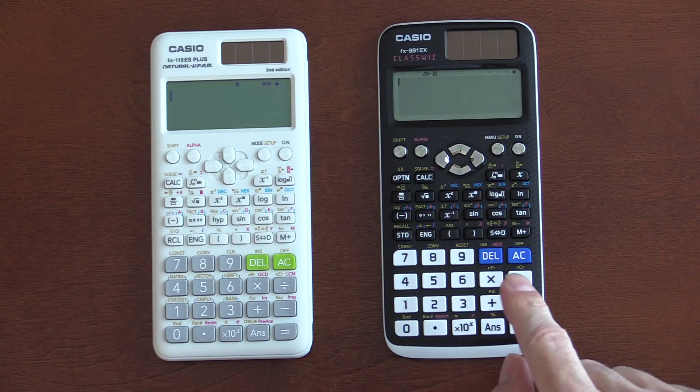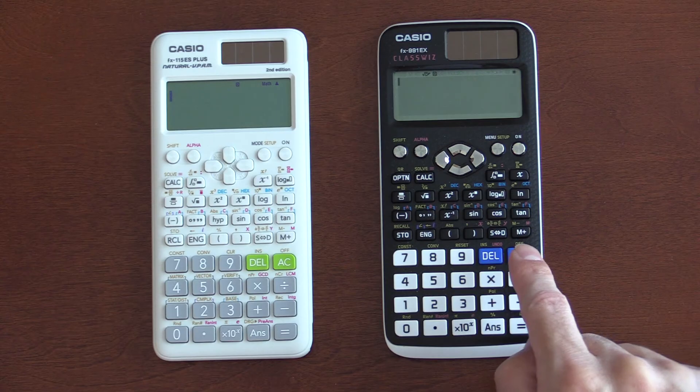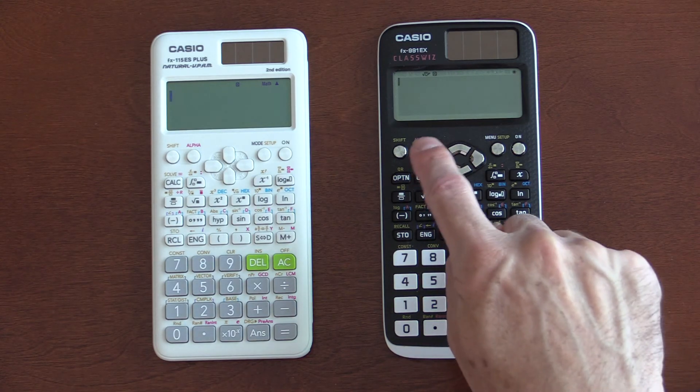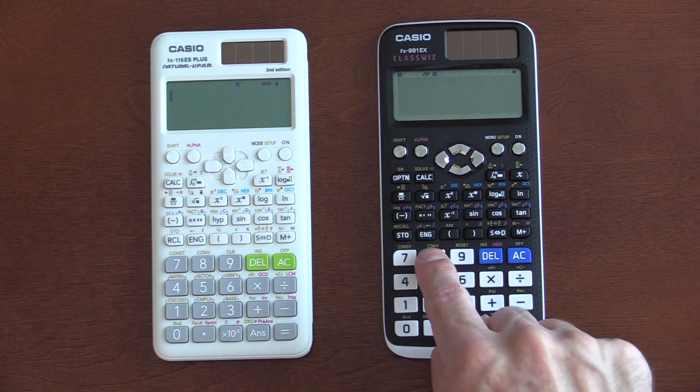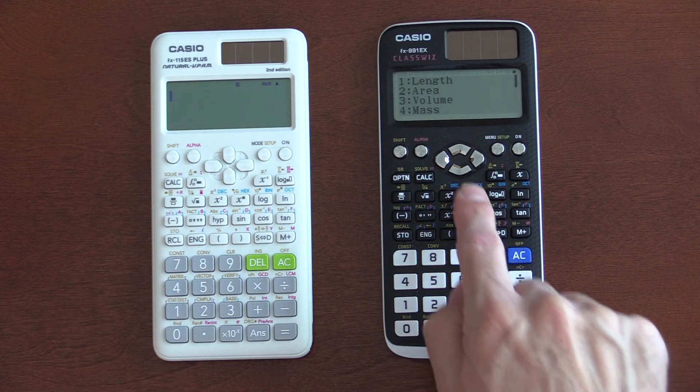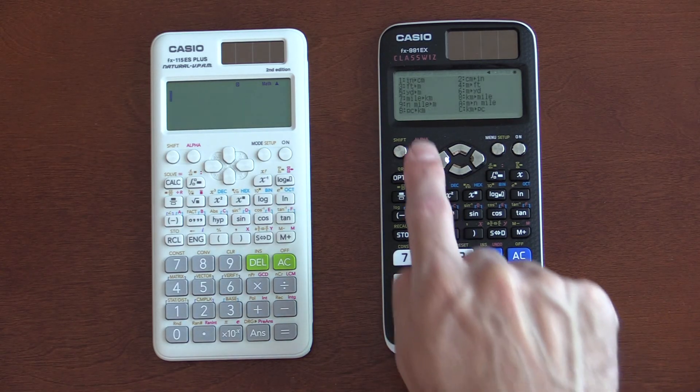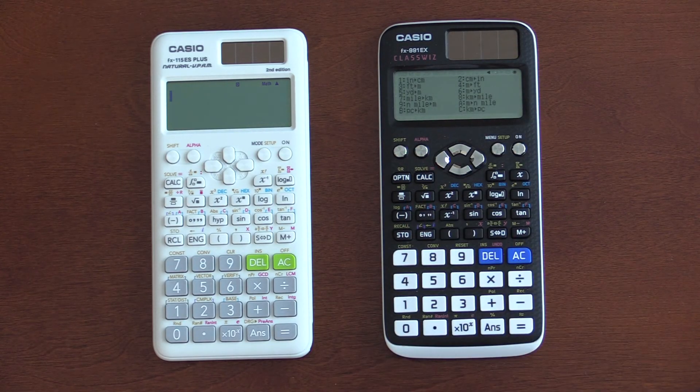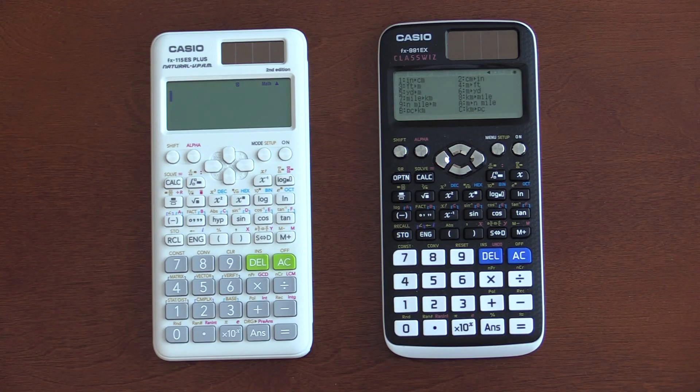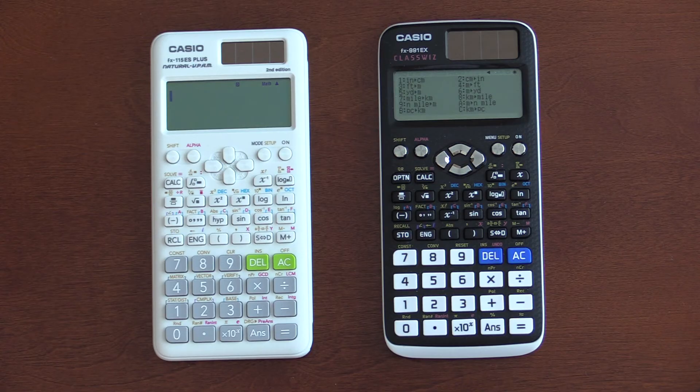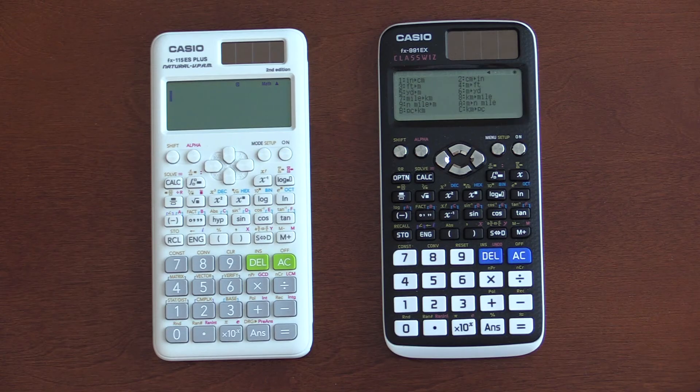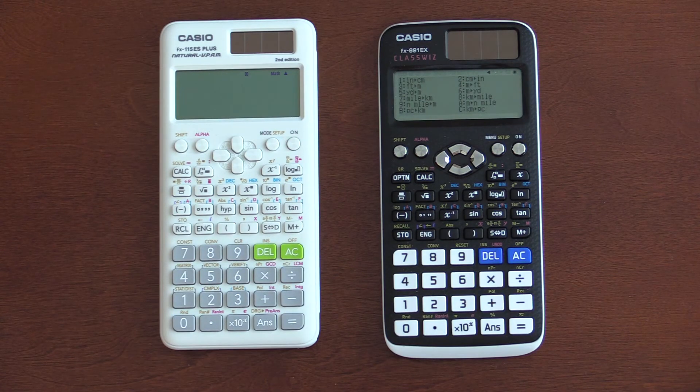Next, I want to show if you're doing conversions on these calculators. The EX is nice because when you go into the conversions menu, they're listed topically. So, let's say we're doing length, we're just going to 1, and then we pick from the list. And, granted, it's a pretty small font, but it's nice because they can pack it in there. And, so you can simply select which of those you would like to do.